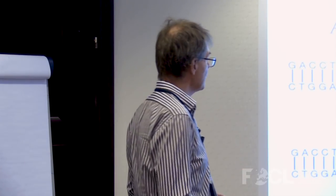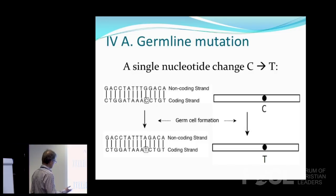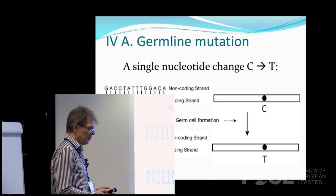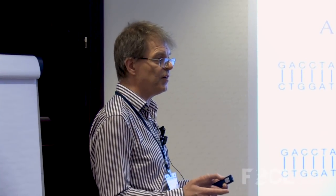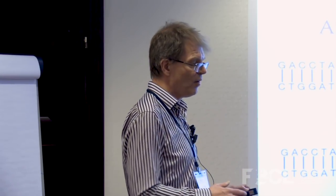Let's say this is part of a chromosome of the mother and we have a C here. When the ovum cell is formed, there is a change from C to T. When that egg cell unites with the sperm cell, we have a fertilized cell with a T in this position instead of C. Through ordinary cell division, that mutation spreads to all cells of the child. We also have somatic mutations that happen in grown-up individuals in some tissues, often giving rise to cancer — but germline mutations are the ones inherited by the coming generation.